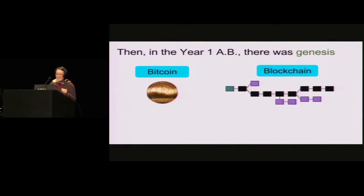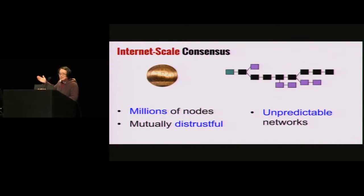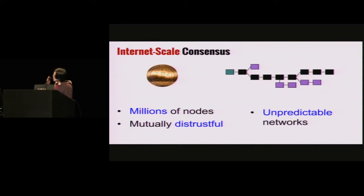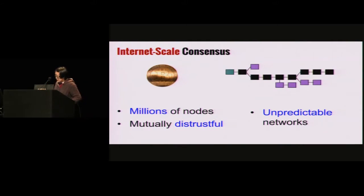Then, in the year one after Bitcoin, there was Genesis. This was a really exciting development because it opened a new chapter for distributed consensus — now we can do internet-scale consensus. Internet-scale consensus raises new challenges. On the internet, we may have thousands and millions of nodes. The nodes may sometimes have bad network connections, some nodes may have outages, so there's a lot more unpredictability. On the internet, everyone's kind of acting selfishly, so we assume that the nodes are mutually distrustful.